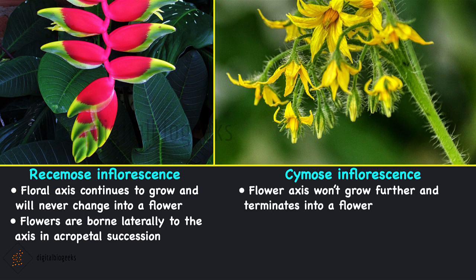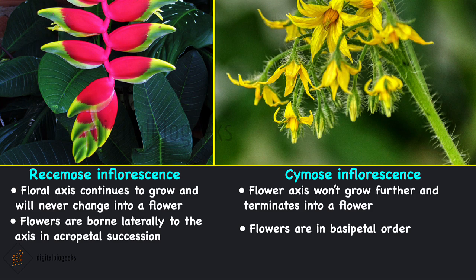In cymose inflorescence, the floral axis does not grow further but instead terminates into a flower. Here the flowers are arranged in basipetal order, meaning the young flowers arise at the bottom and older flowers can be seen at the top. In racemose inflorescence the flowers are in acropetal succession, and in cymose inflorescence they are in basipetal succession.